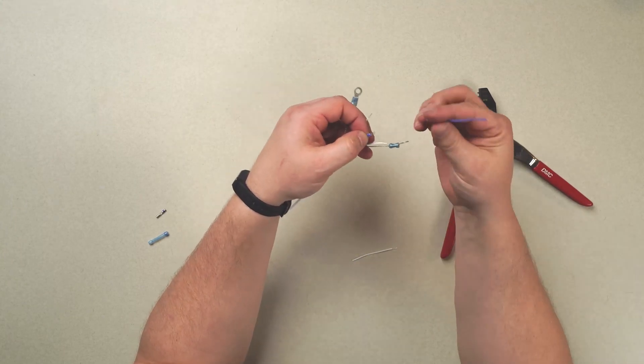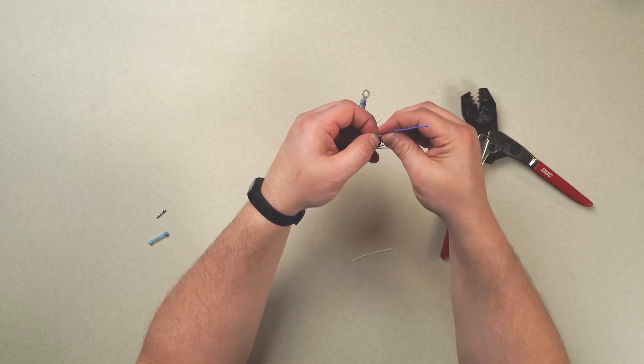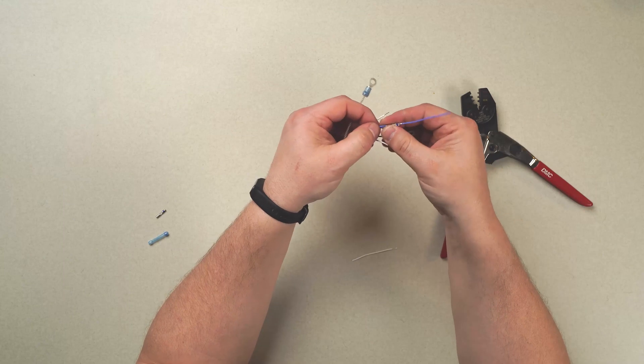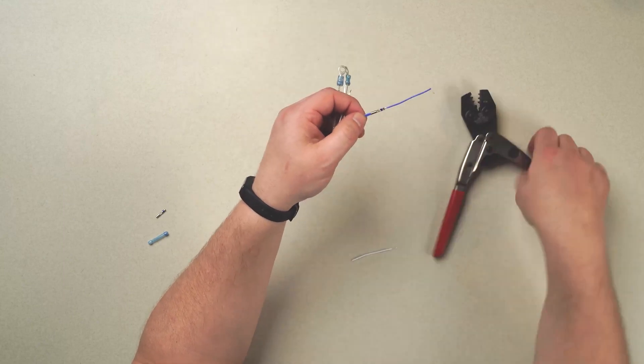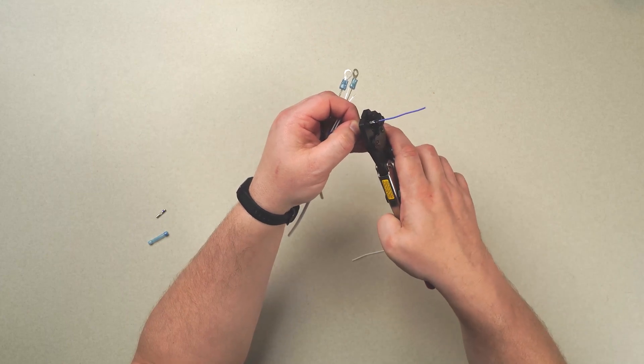Again, ensuring both wires are pushed through and are seen in the window. We then put them in the tool and execute our crimp.